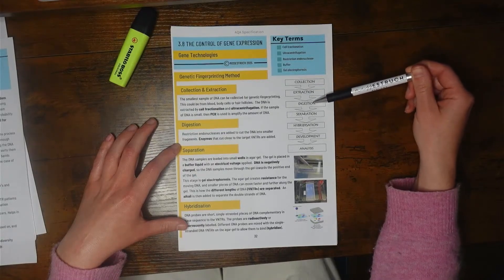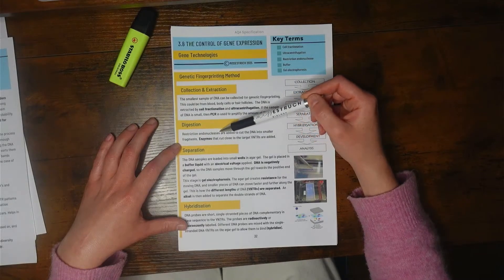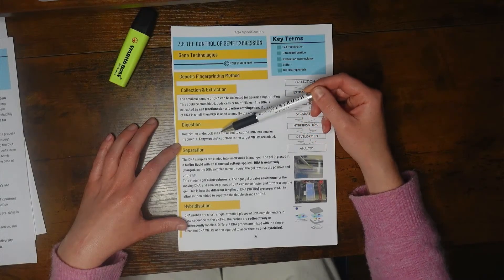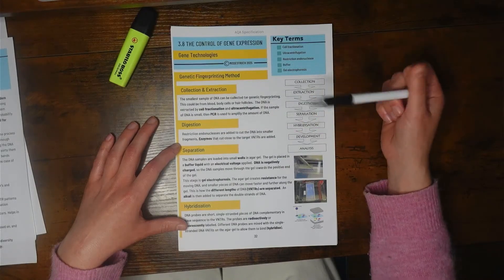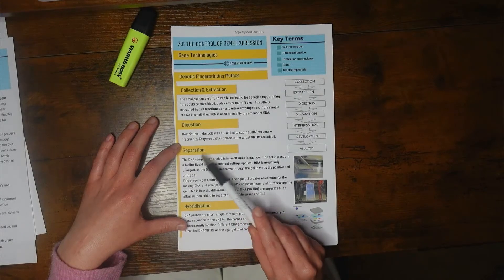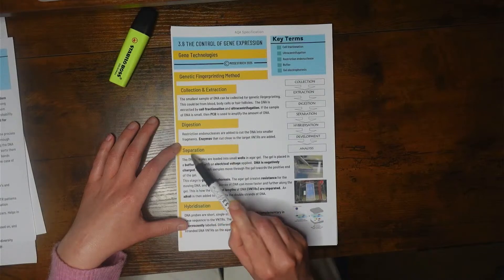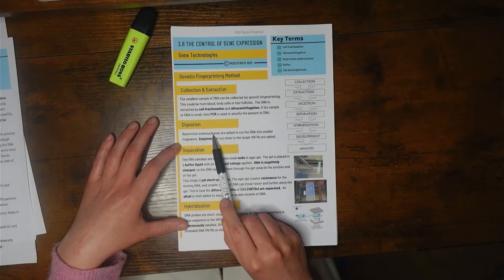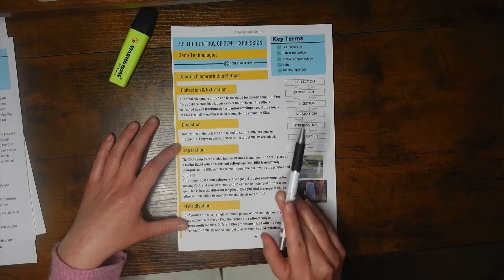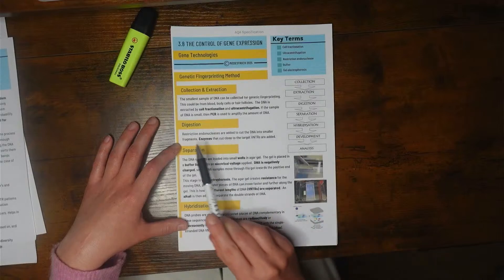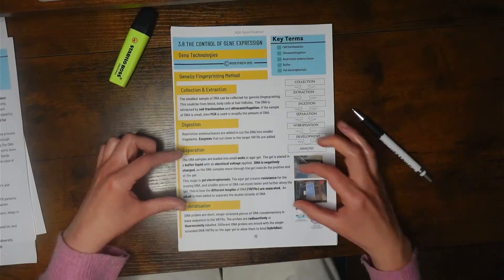Next we need to digest it. Digestion is when we'd use restriction endonucleases, which are the enzymes that can break the phosphodiester bonds and therefore cut DNA into smaller fragments. When you learn about creating DNA fragments, one way you can do that is using restriction endonucleases, and you learn about restriction sites, palindromic sequences, and sticky ends.